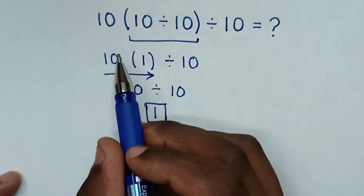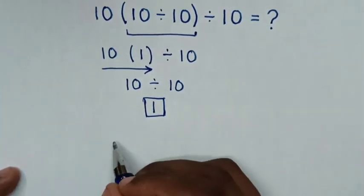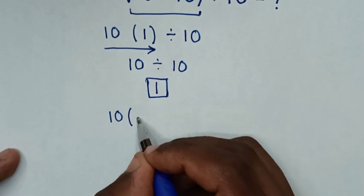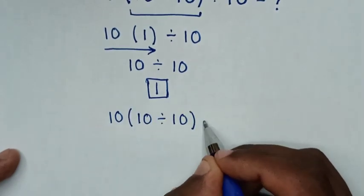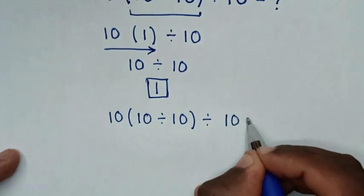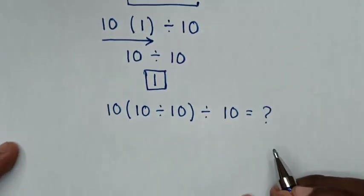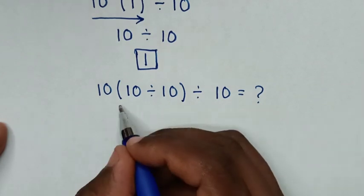Or in another method, from our problem, 10(10 divided by 10) divided by 10. So first we deal with here inside the bracket,